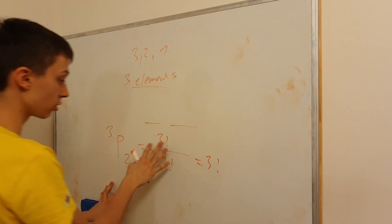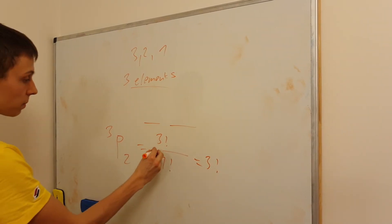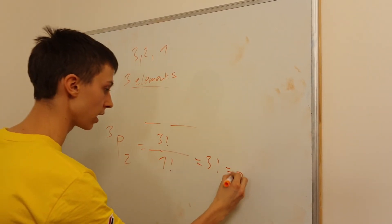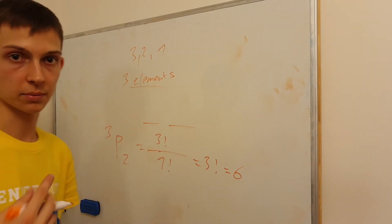This is going to be equal to 3 factorial because this is 1. So this is going to be 6. 3 times 2 times 1 times 0 factorial, which is 6.